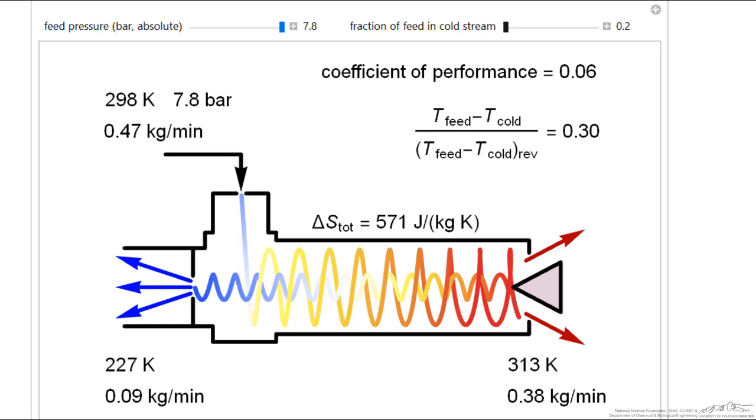If I increase the fraction of cold gas and decrease the fraction of hot gas, then the hot gas gets hotter. Now the hot gas is more than 100 degrees Kelvin hotter than the feed gas, but only 20% of gas is hot gas.